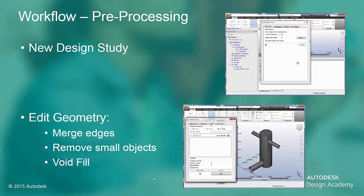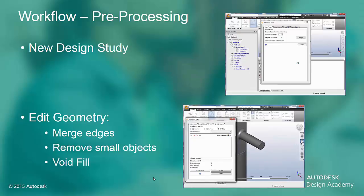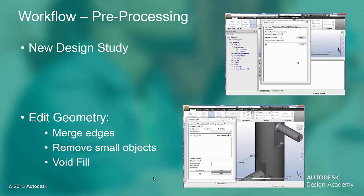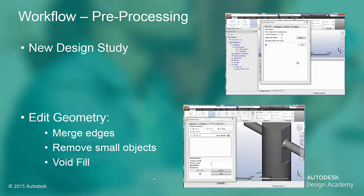The CAD model only has the solid objects that make up the faucet. We need to create the fluid volume that is contained by these solids. We do this by capping all of the openings in the solid CAD model and filling the void that is created by the now capped space inside. We choose the outside edge of the openings and create a surface — the edges have to form an enclosed surface. After all of the openings have been capped, click the fill void button. This will create a new volume or part for the model.